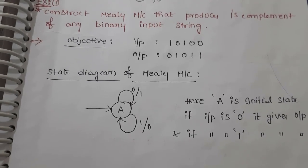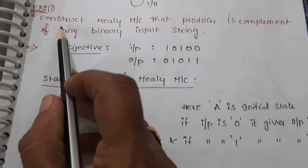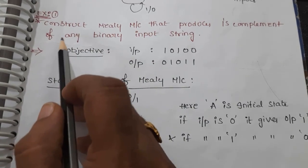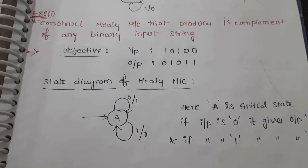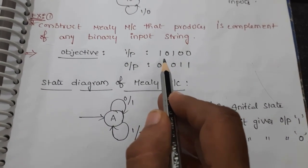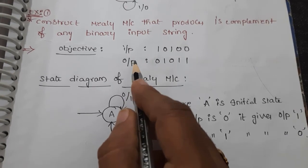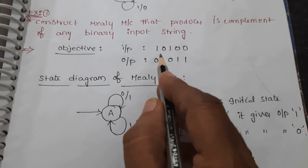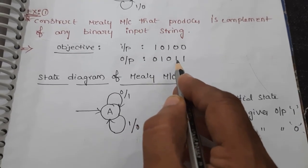Hi students. In this session let us see one more example on the construction of a Mealy machine. The problem is: construct a Mealy machine that produces the one's complement of any binary input string. That means if the input binary string is 10100, then its one's complement — where one becomes zero and zero becomes one — gives the output string 01011.